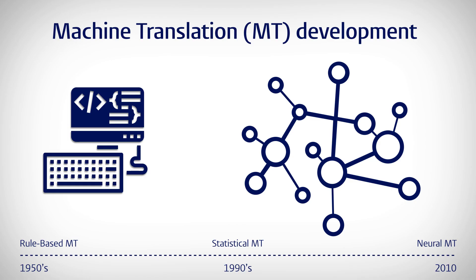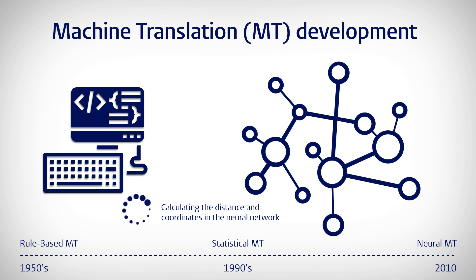By the year 2010, engineers had recognized the potential of artificial intelligence, and they introduced machine learning and neural networks into their systems. Neural machine translation systems place each word in a multidimensional space, in which words that are related appear close together and words that are unrelated appear far apart. So now the machine can calculate the distance between words, and can use the coordinates of words in the multidimensional space to predict which word — and which translation of a word — you need in a particular context.